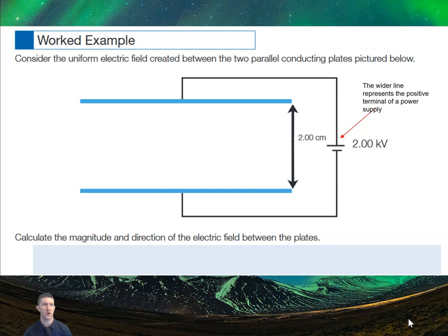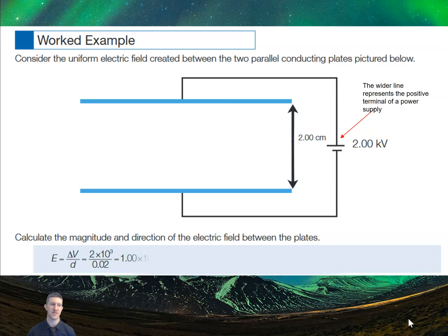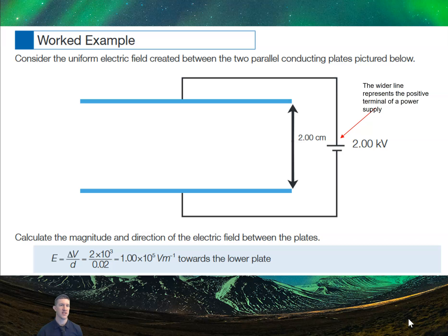Here's an example: if we create an electric field between two parallel plates with a potential of 2 kilovolts and the plates are 2 centimetres apart, what is the magnitude and direction of the electric field? Using E = ΔV/d, we plug in 2 kV (2 × 10³ V) divided by 0.02 m, making sure to use SI units. We get 1.00 × 10⁵ V/m towards the lower plate, because the positive terminal (the larger line in the circuit symbol) is at the top, making that the positive plate, so the field points downward.